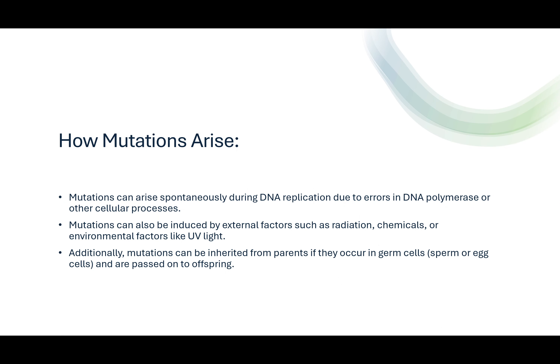So how do these mutations arise? We know that there can be an error in the DNA polymerase or other cellular processes. When we're looking at DNA replication, there can be errors in PCR, errors in DNA polymerase, and other cellular components. If there's an error in the machinery used to replicate DNA, we can actually have mutations arising from that. Mutations can also be induced by external factors such as radiation, chemicals, and environmental factors like UV light.